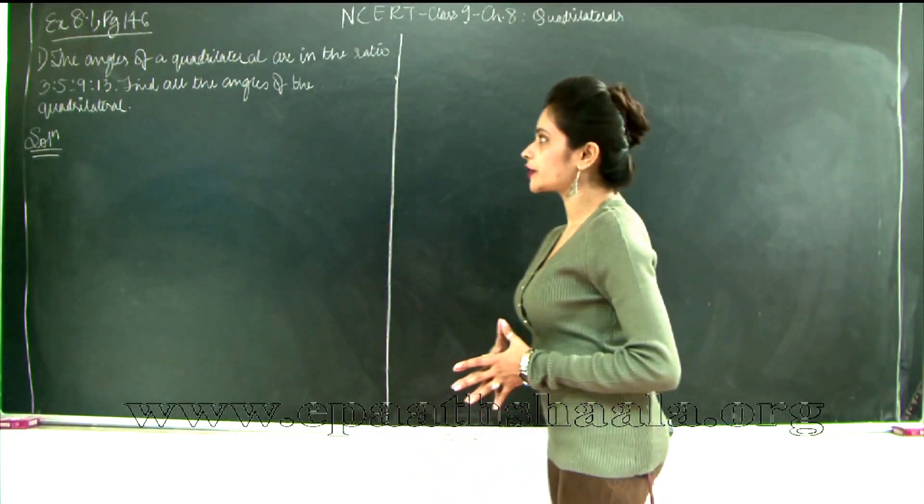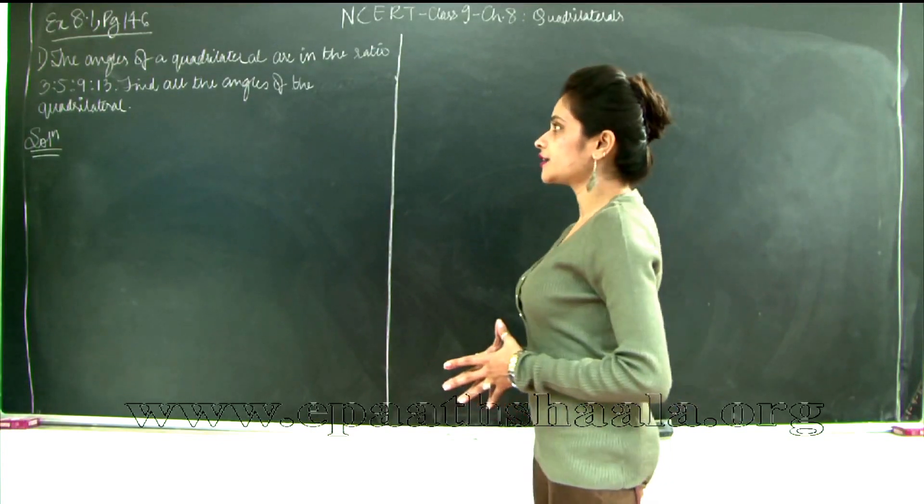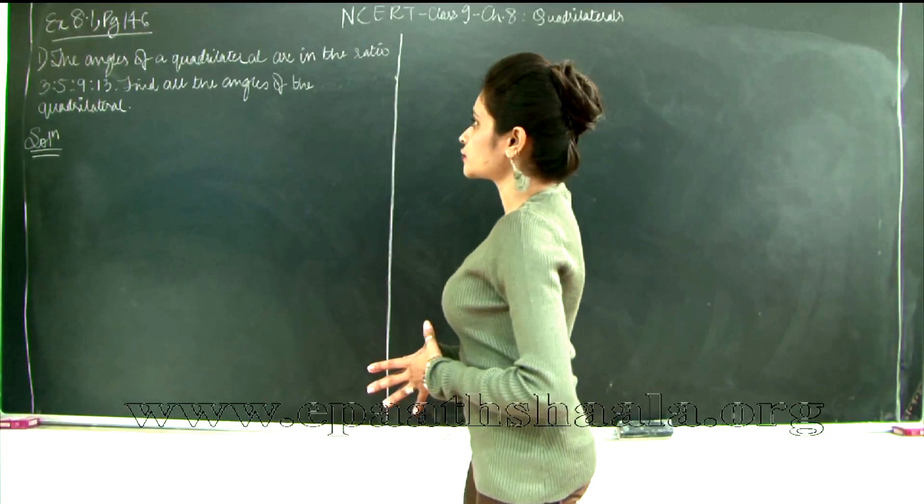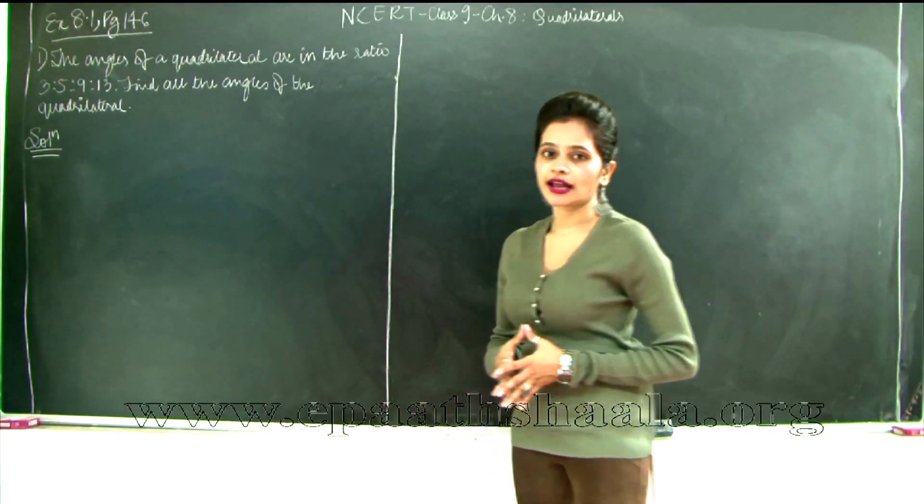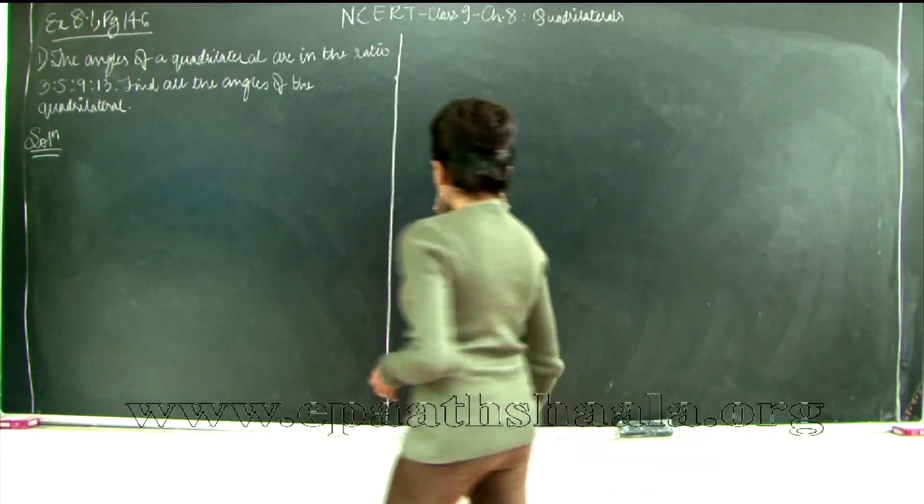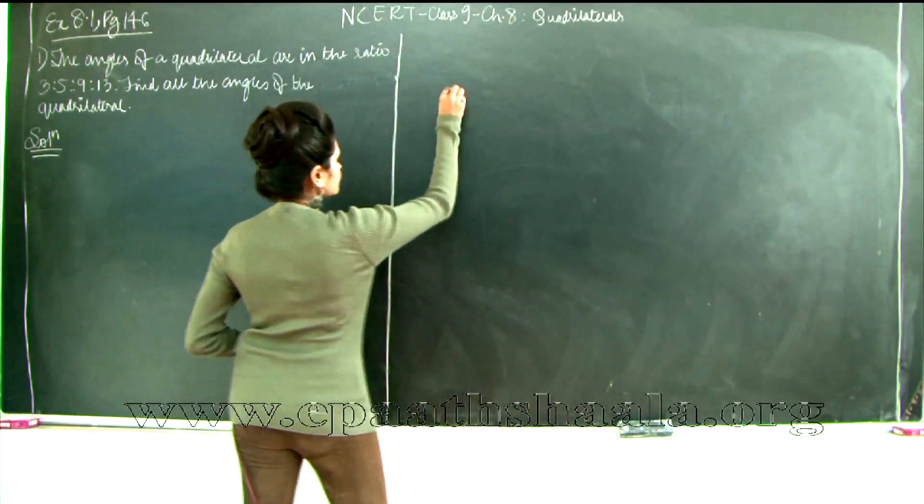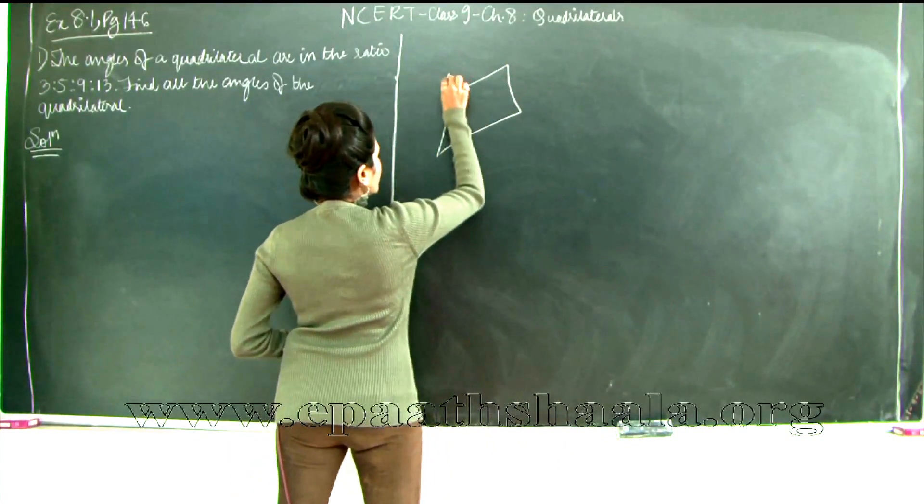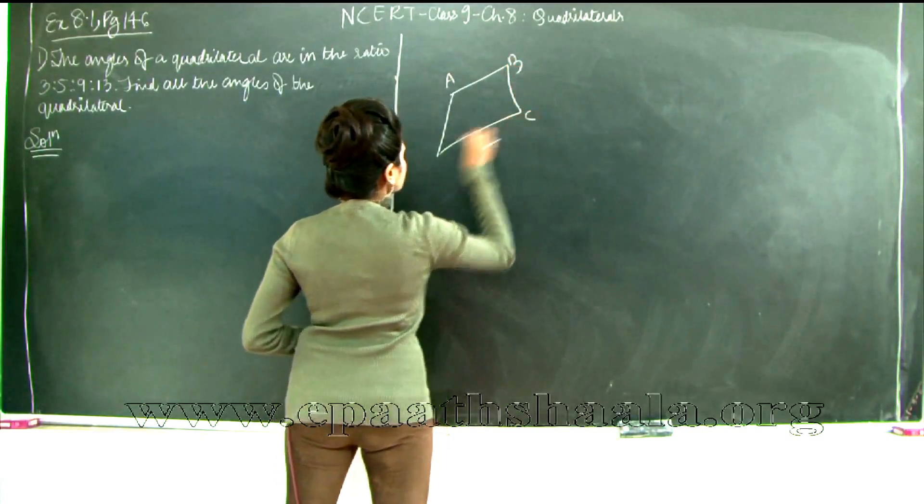So the first question reads that the angles of a quadrilateral are in the ratio 3 is to 5 is to 9 is to 13. You have to find all the angles of the quadrilateral. So let's say I have my quadrilateral over here A, B, C, D.